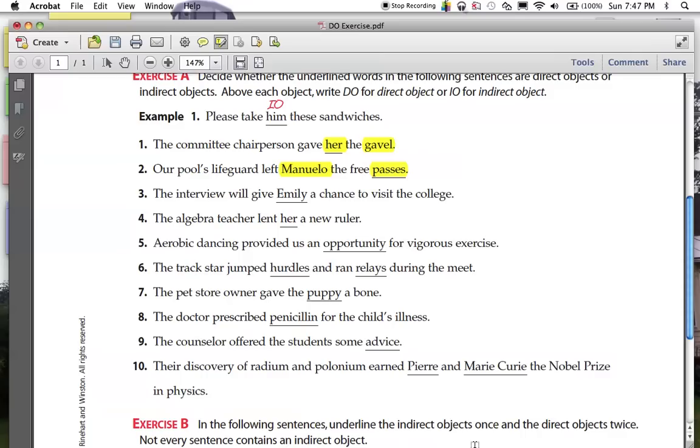Number three, Emily is an indirect object. Why? Because what's being given? You got it. I heard you all. Way up here in Ford City, I heard you. A chance. Chance is a direct object. Who's the chance being given to? Oh, Emily.